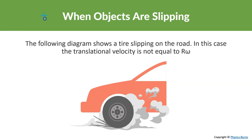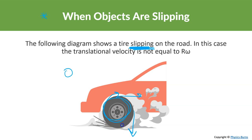When objects are slipping, the diagram shows a tire slipping on the road. In this case, the translational velocity is not equal to the radius times the angular velocity. For example, let's say a car's tires are spinning really fast but just slipping, so the car is not moving. That means the translational velocity is zero, but the tangential velocity is going to be very high. When it is slipping, the translational velocity is not equal to the tangential velocity on the outside.